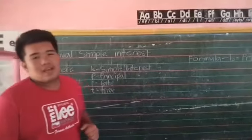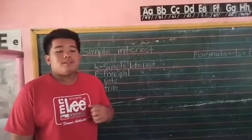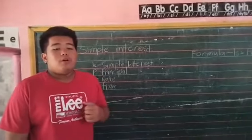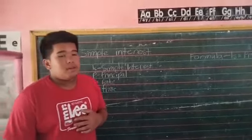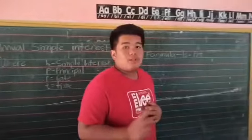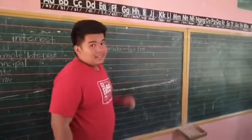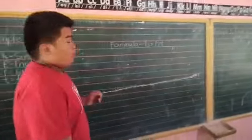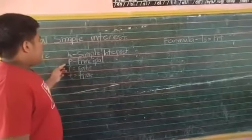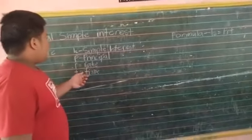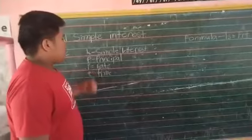So when we see annual simple interest, it's a method to calculate the amount of interest charged on the sum at a given rate for a given period of time. So the formula that we're going to use is I sub S equals PRT, where I sub S is our simple interest, P is our principal, R is the rate, and T is our time.